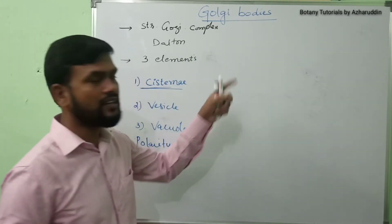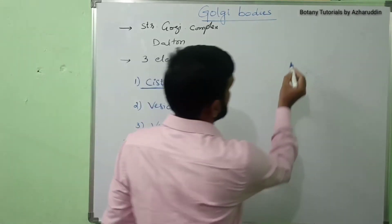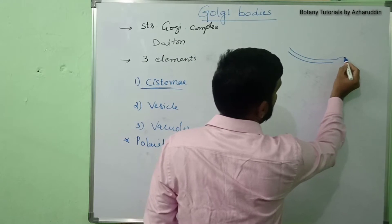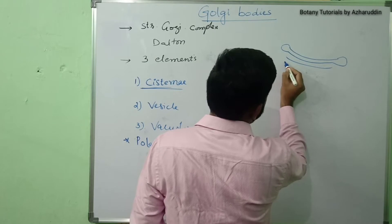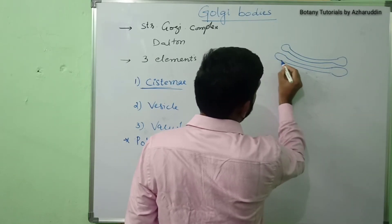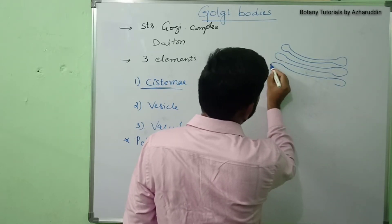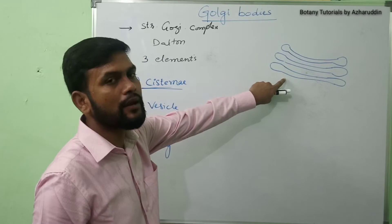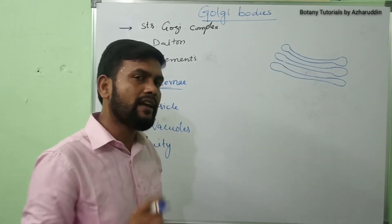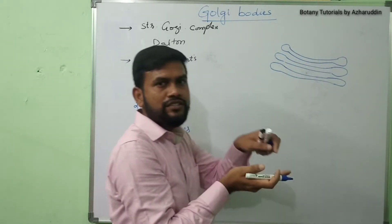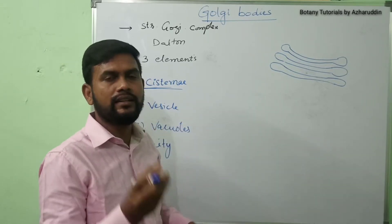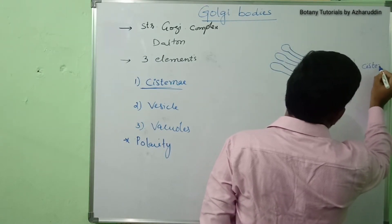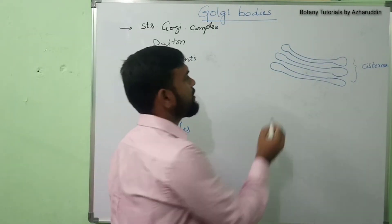The first element is cisternae. The cisternae are elongated, flattened and sac-like structures. In each Golgi body, the number ranges from three to seven cisternae. They are sac-like structures that are parallelly arranged one above the other. They appear like stacks.